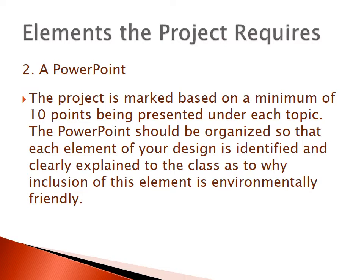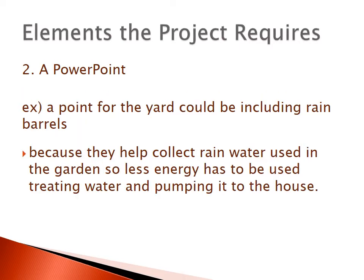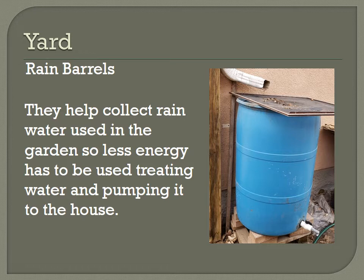You need a PowerPoint, and the project is based on a minimum of 10 points under each topic heading. The PowerPoint should be organized so that each element of your design is identified and clearly explains to the class why you included it and what the environmentally friendly advantage is. Here is a first example: I wanted to put a rain barrel in my yard, so the slide has the title 'Yard' at the top, the specific item 'rain barrel,' and the explanation that rain barrels help collect rainwater used in the garden so less energy has to go into treating and pumping water to the house. Every slide should have a picture — I included one of my own rain barrel.